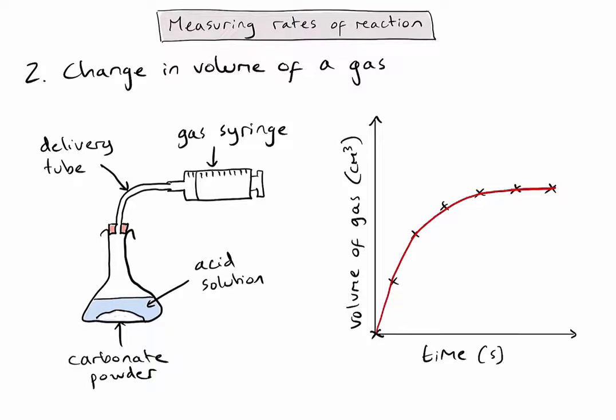At the beginning of my reaction, we see the steepest part of the line where the rate of reaction is fastest because we have the highest concentration of reactants able to bump into each other. As the reactants get used up, it's less likely they're going to bump into each other, so my rate begins to slow down.